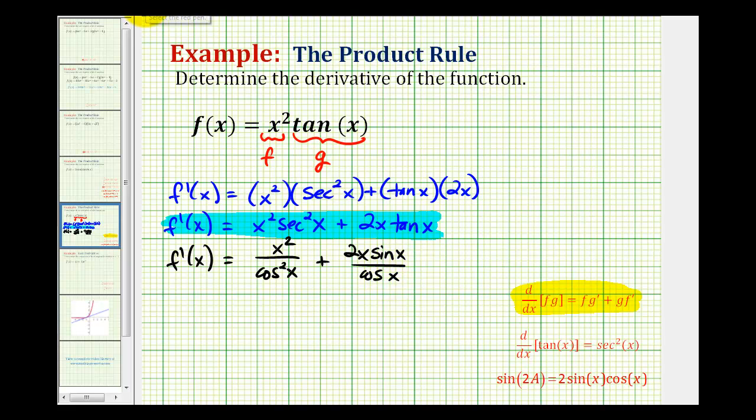If we tried to add these two fractions together, the common denominator would be cosine squared x. So let's multiply this by cosine x over cosine x and see what this does for us.